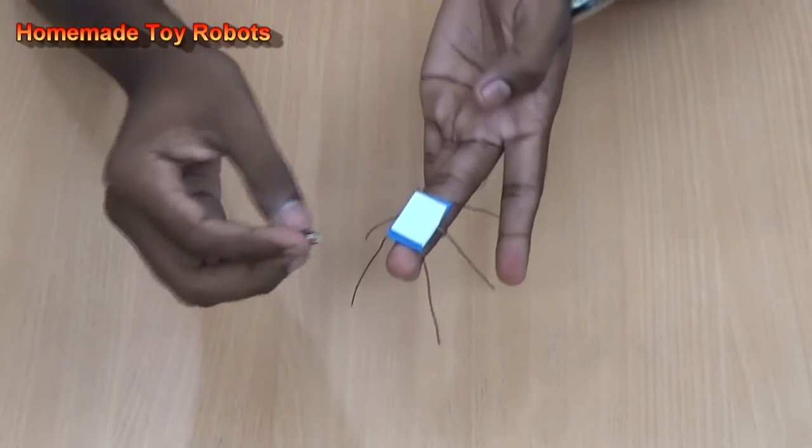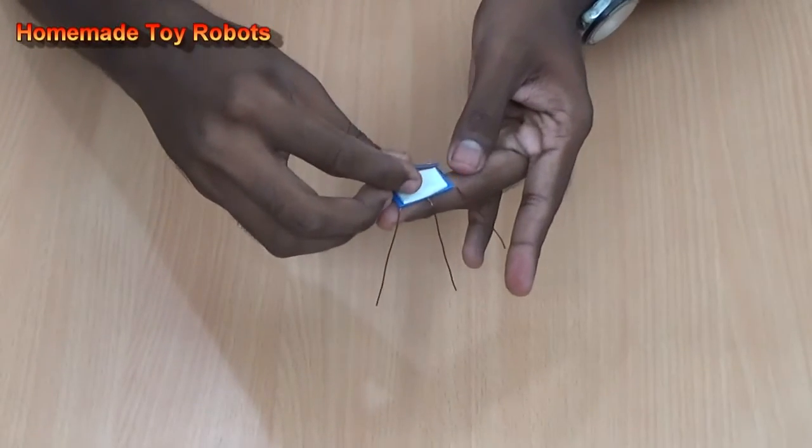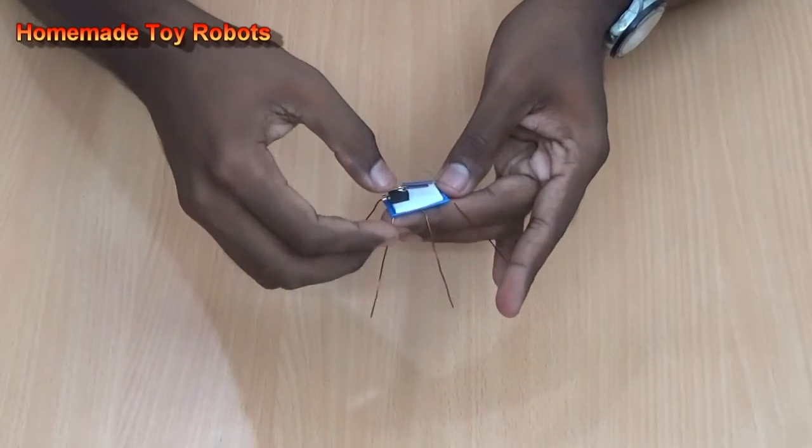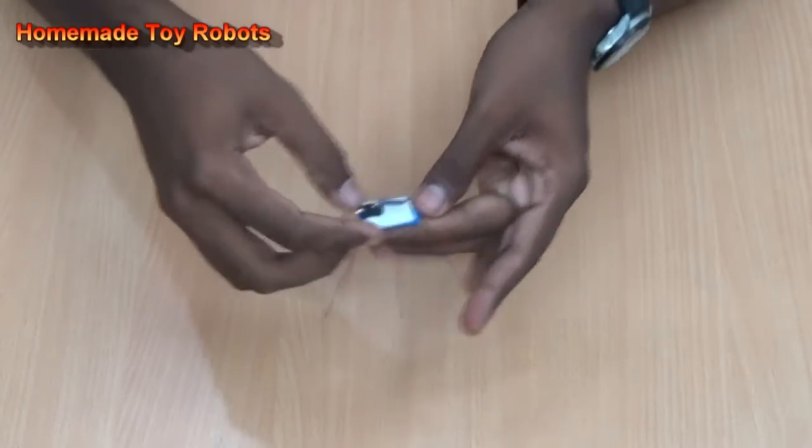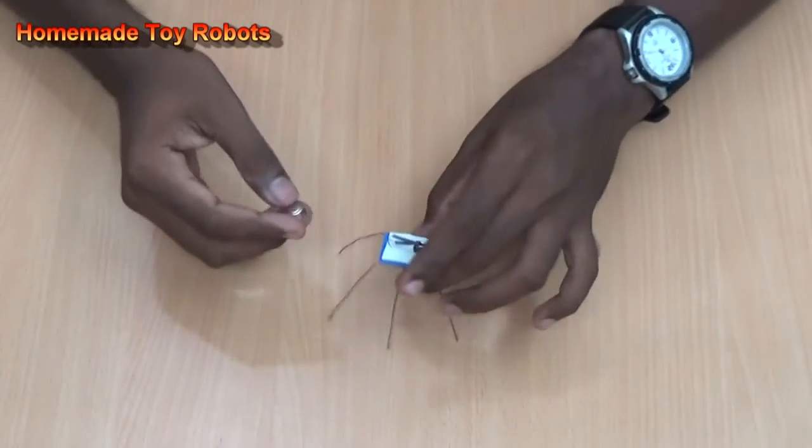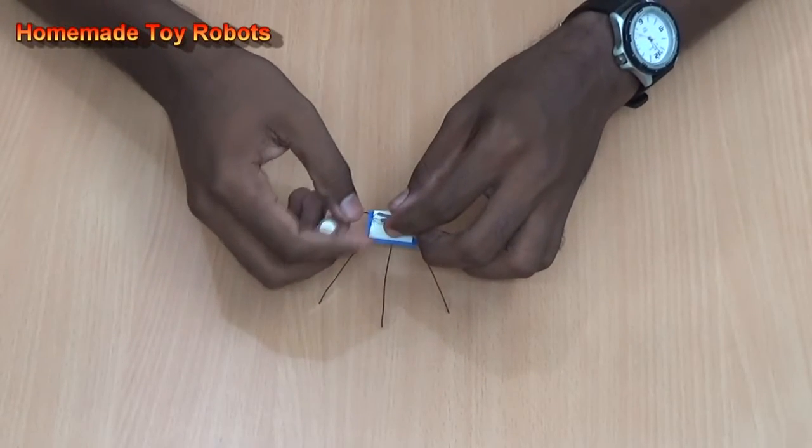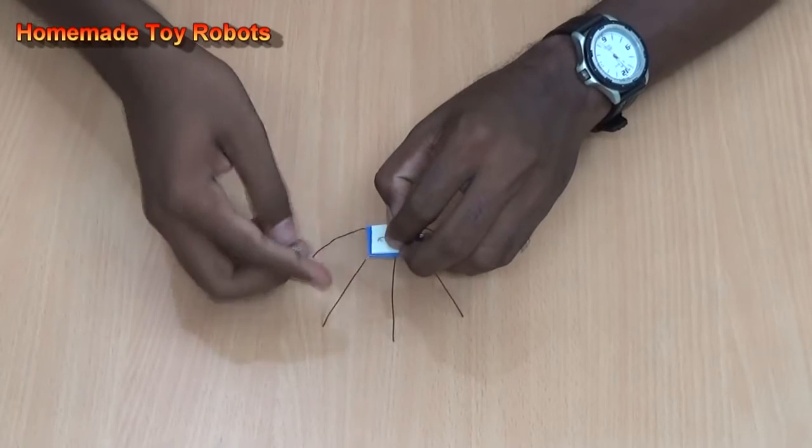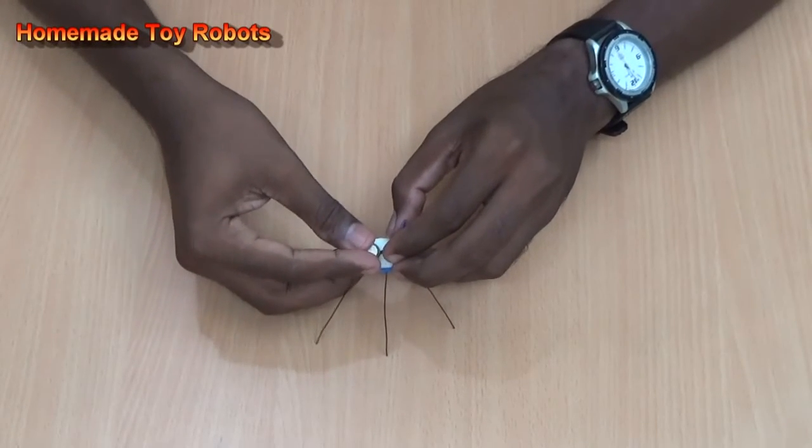Next take the vibrator motor and place it in this area. Then take the battery and place a wire in this place using the battery.